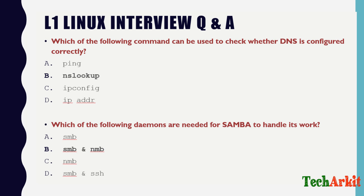Which daemons are needed for Samba to handle its work? When you configure a Samba server, two services must be running: smb and nmb. Both services need to be enabled whether you want to access shares on a remote server or mount the Samba server on a remote machine.